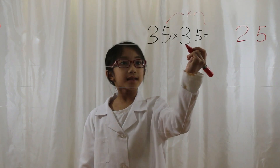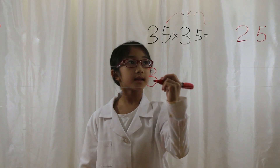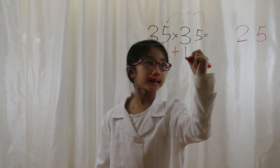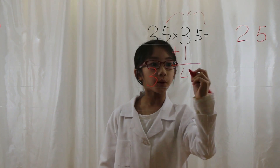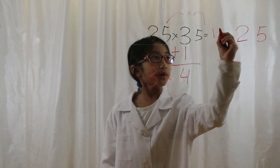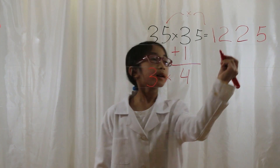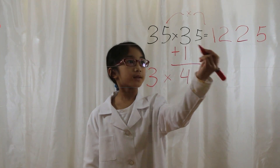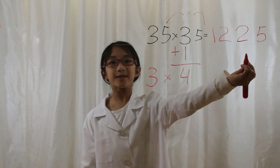Then you look at the tens digits. You bring the first tens digit down, and then you add a 1 to the second tens digit. 3 plus 1 is 4. 3 times 4 is 12. You put a 12 at the front. The answer is 35 times 35 equals 1225.